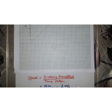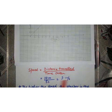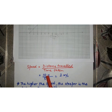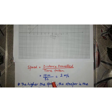Now, if you want to calculate the speed of the body, it can be calculated as distance traveled upon time taken. So, it will be 10 meters upon 5 seconds. This will come out as 2 meters per second.